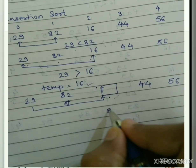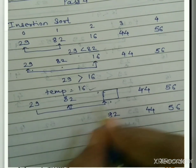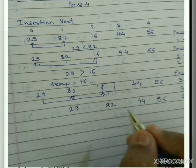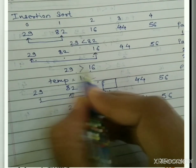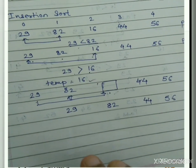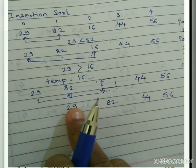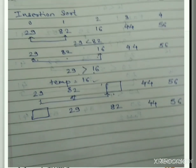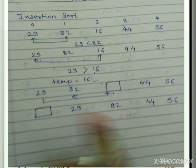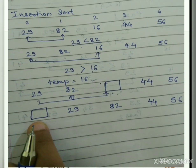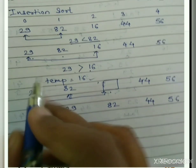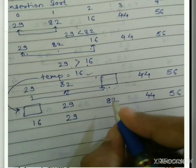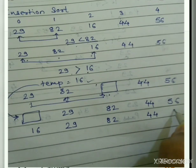After storing 16 in a temporary variable, we shift 82 to where 16 was and shift 29 to where 82 was. The zeroth position is now blank. We insert the temporary value 16 into the blank space at position zero. The output of Pass 2 is: 16, 29, 82, 44, 56.